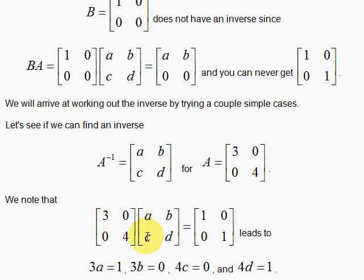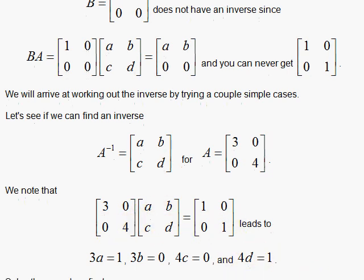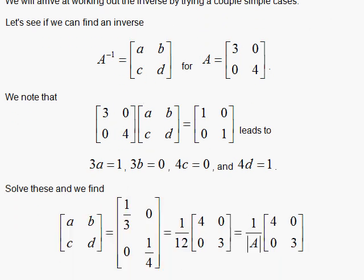In other words, 3A plus 0 has to be equal to that 1. Then 3B plus 0 has to be 0. And then 0 times A plus 4C has to be equal to 0. So 4C has to be equal to 0. And here 0 times B plus 4 times D has to be equal to 1. So 4D has to be 1.